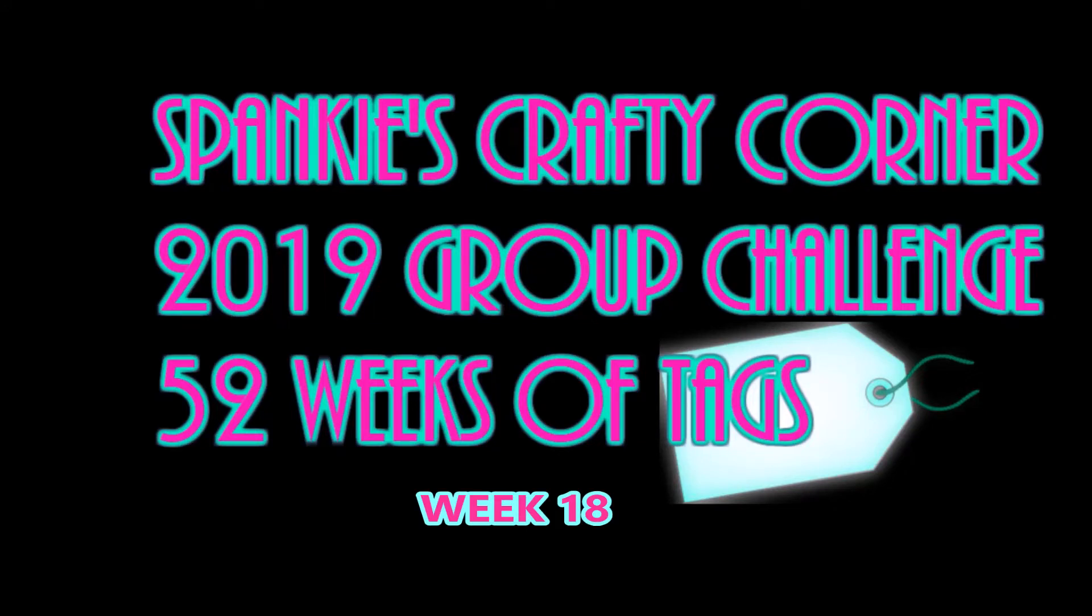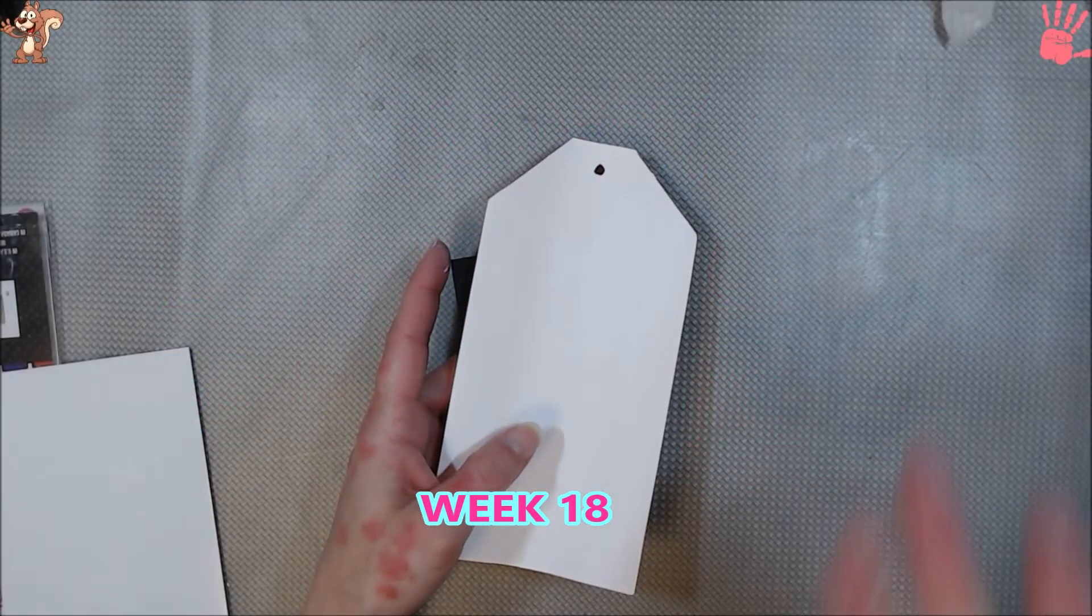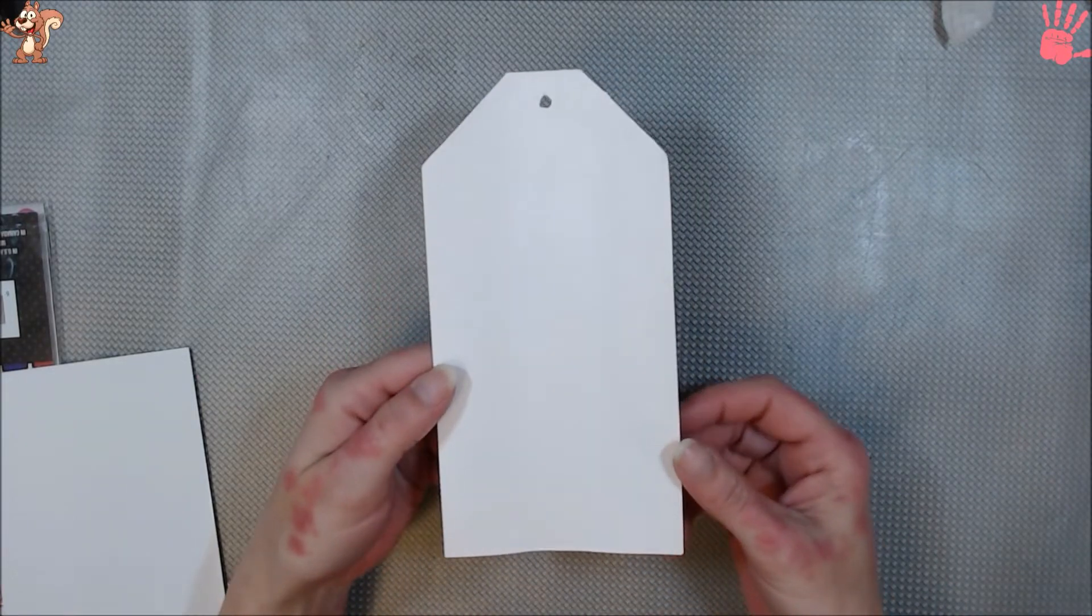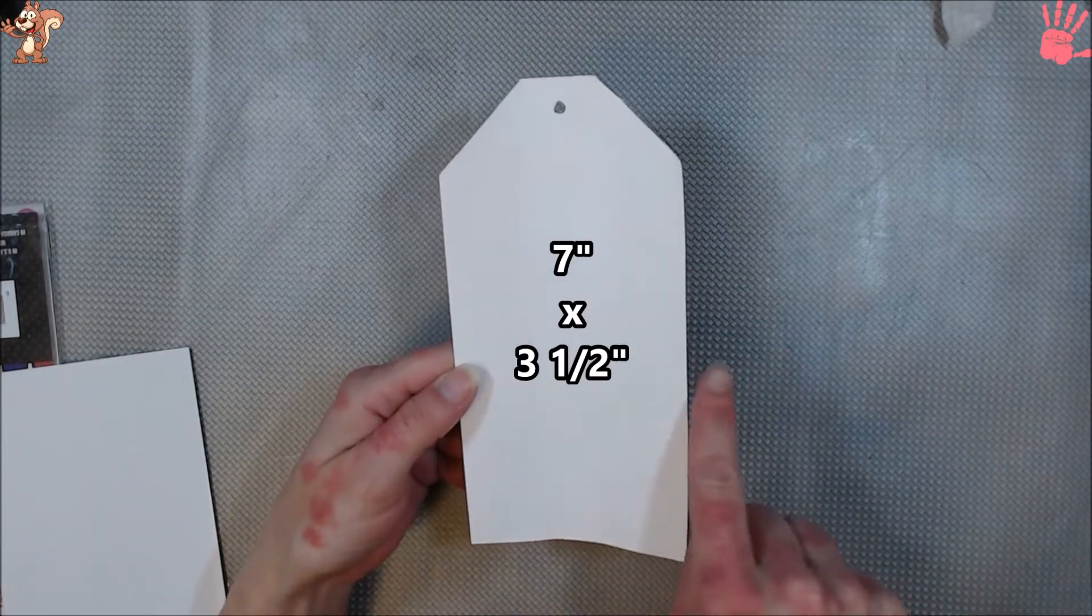Hey guys, welcome back to the Corn at Spanky, and we are on week 18 of Spanky's Crafty Corner 2019 group challenge, 52 weeks of tags. Holy moly, week 18 already. That's crazy. Alright, and our tag size is 7 inches by 3 and a half.